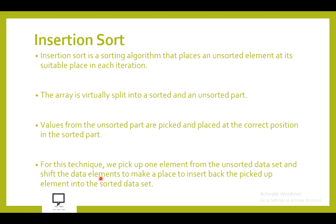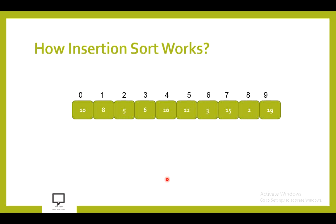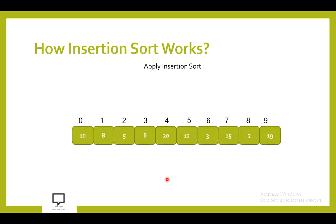Every time, we pick a value from the unsorted part and place or insert it at the correct position in the sorted part. This is the theme behind insertion sort. We usually pick one element from the unsorted data set, shift the data elements to make space, and insert that picked element into the sorted data set. Making space through shifting is the most important task. Now let's start with the example.